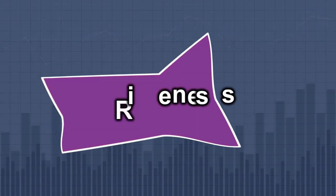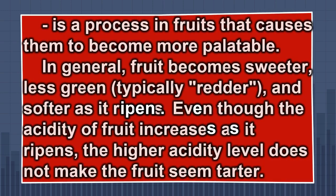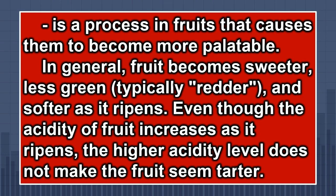Ripeness is a process in fruits that causes them to become more palatable. In general, fruit becomes sweeter, less green, typically redder, and softer as it ripens. Even though the acidity of fruit increases as it ripens, the higher acidity level does not make the fruit seem more tart.